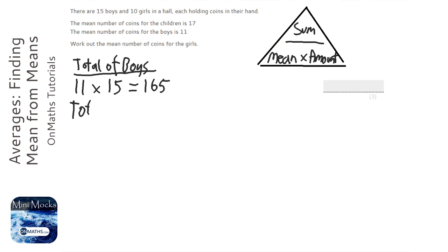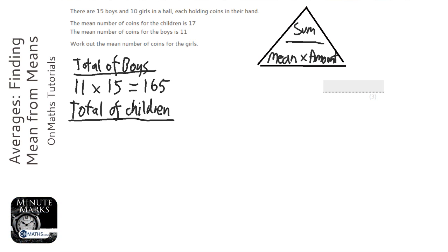Then we can work out the total of children. Same process. The mean of the children is 17. And the amount of children, well it's 15 boys, sorry 10 girls, so that's 25. And I can just do a grid.